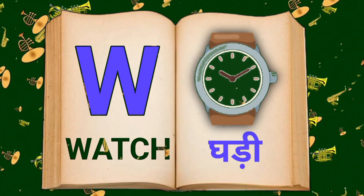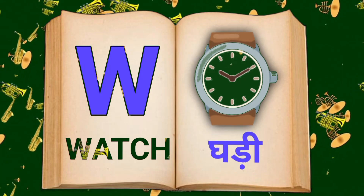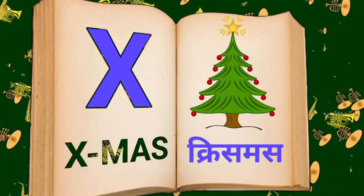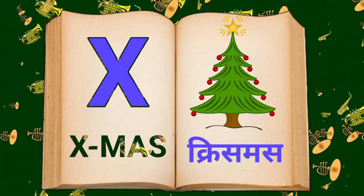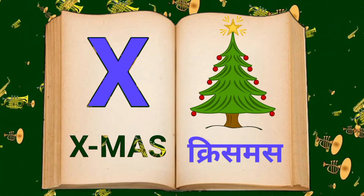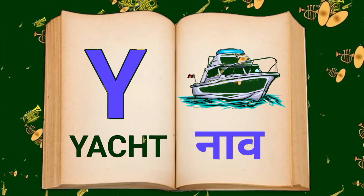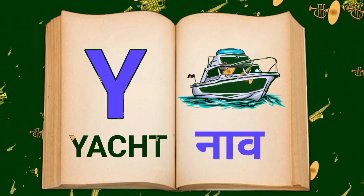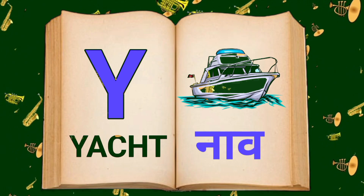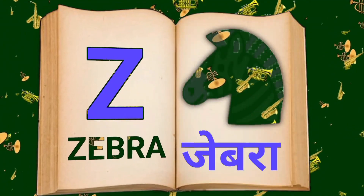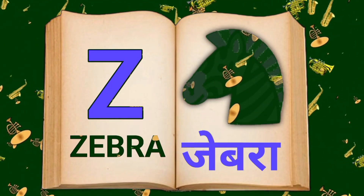W for Watch, Watch means ghadi. X for Xmas, Xmas means Christmas. Y for Yacht, Yacht means naav. Z for Zebra.